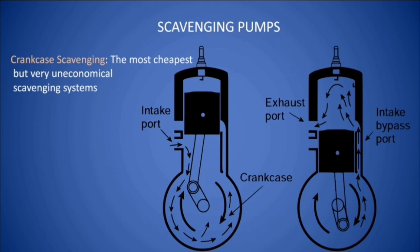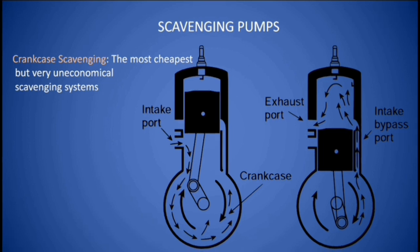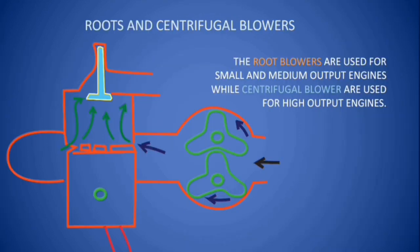Another disadvantage of crankcase scavenging is that oil vapours from the crankcase mix with the scavenging air, resulting in high oil consumption. Due to these two disadvantages, crankcase scavenging is not preferred. For high-output two-stroke engines, a dedicated scavenging pump is required. Root blowers, centrifugal blowers, or supercharger-like devices are used as additional scavenging pumps for two-stroke engines.